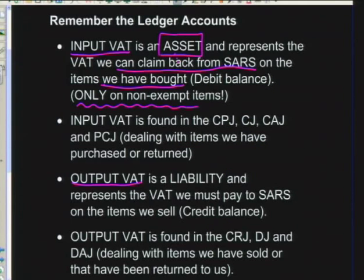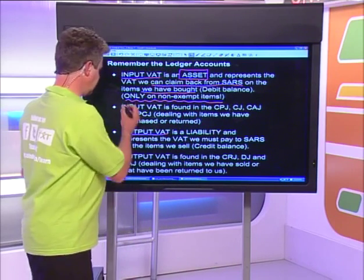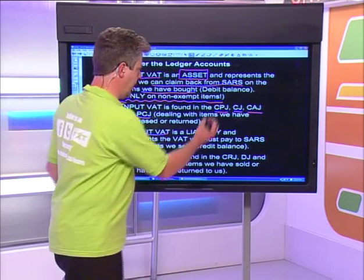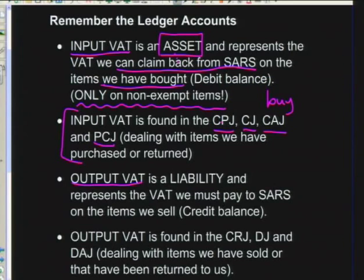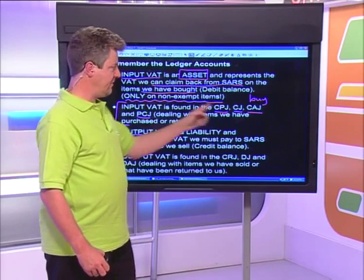You can only claim input VAT back on items that are not exempt from VAT, so you need to learn which items are exempt and which you can claim input VAT on. Input VAT is found in the journals CPJ, CJ, CIJ, and PCJ - all four of which are used when we buy items or return items to creditors. The numbers dealing with input VAT will be found in those four journals.